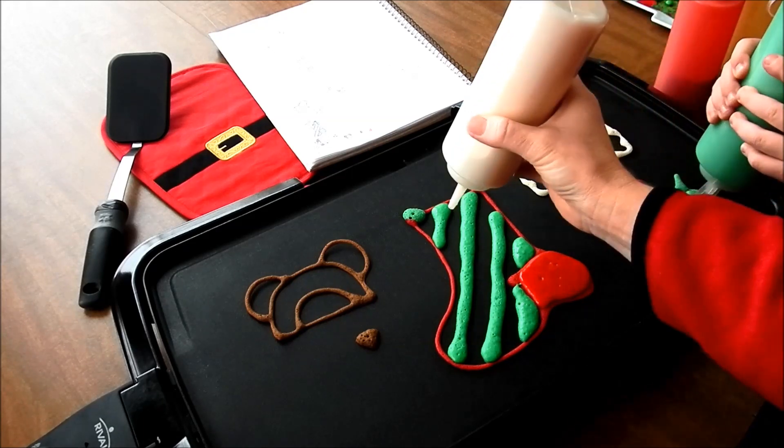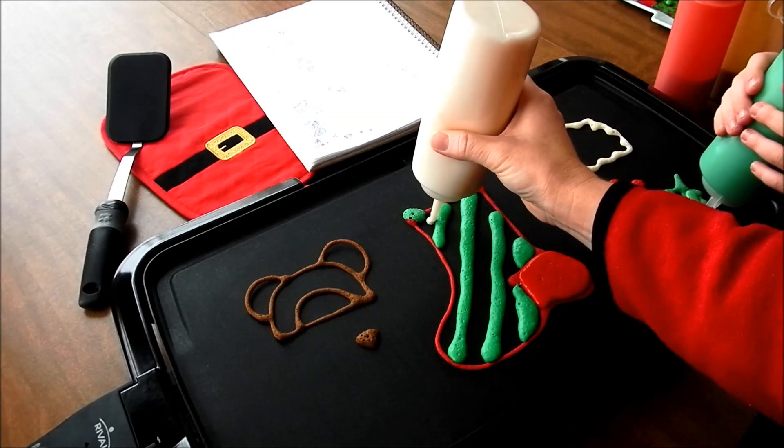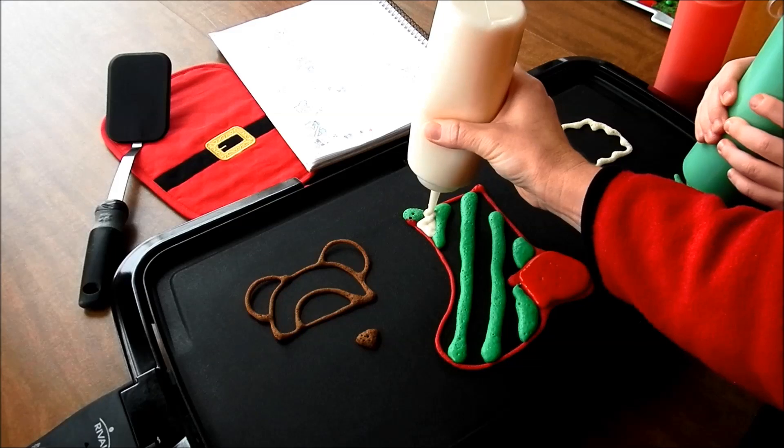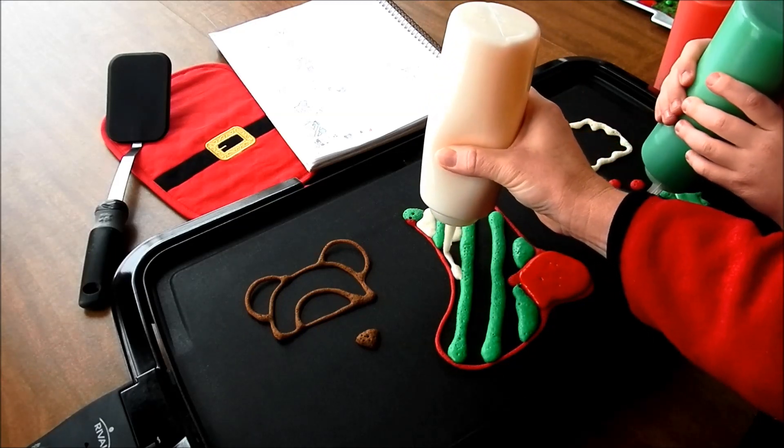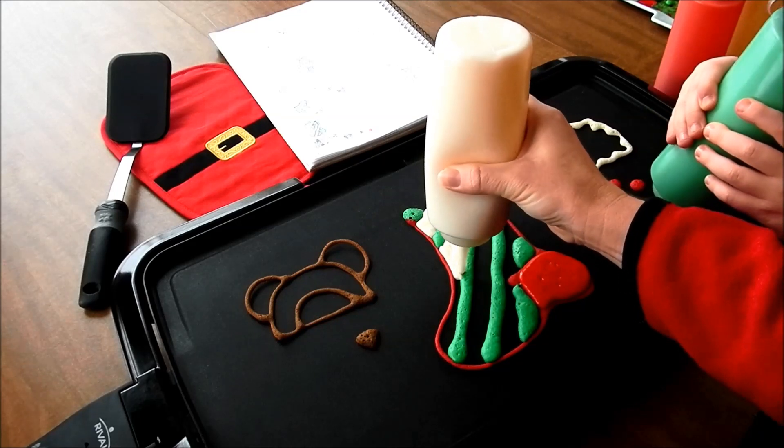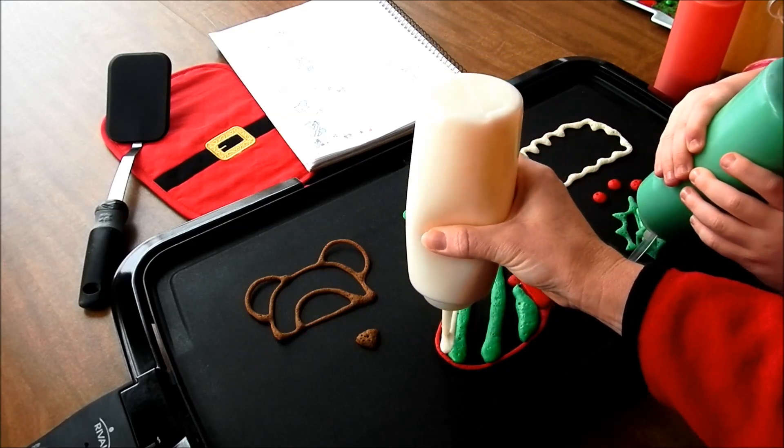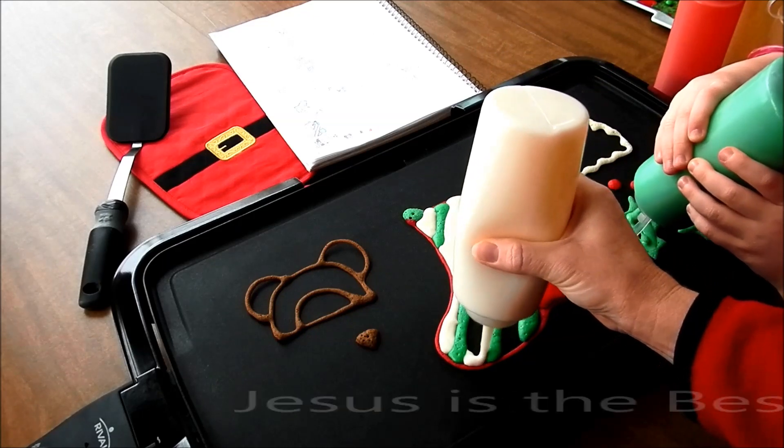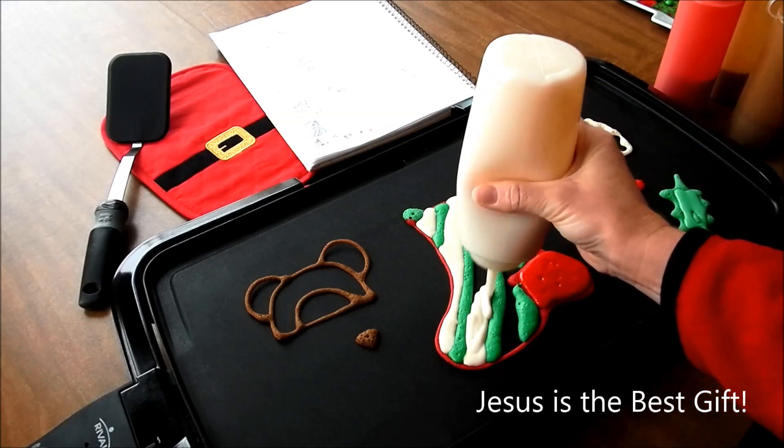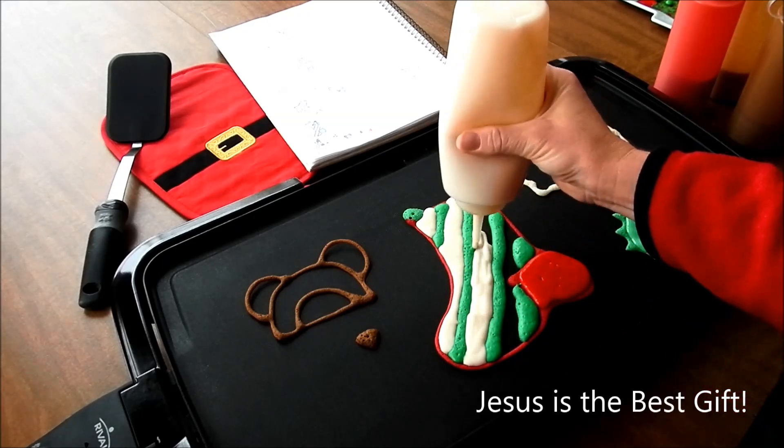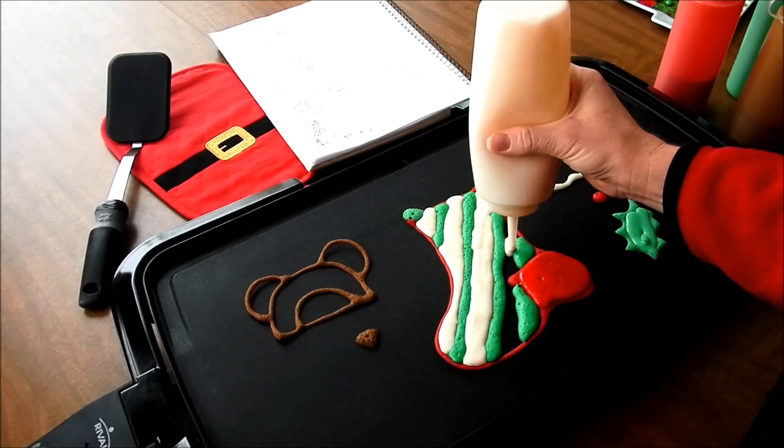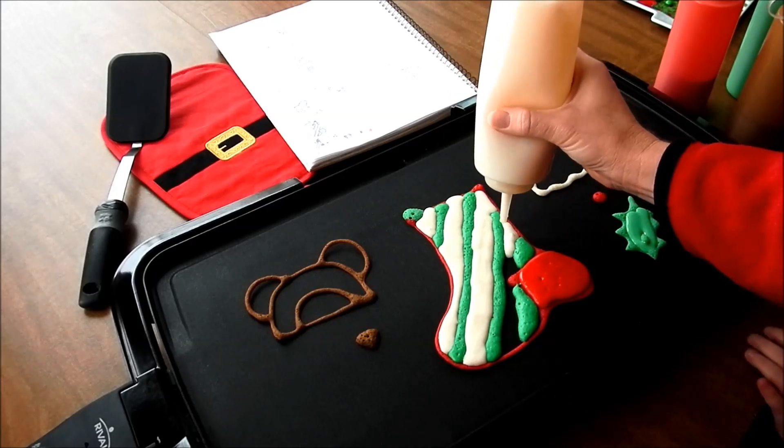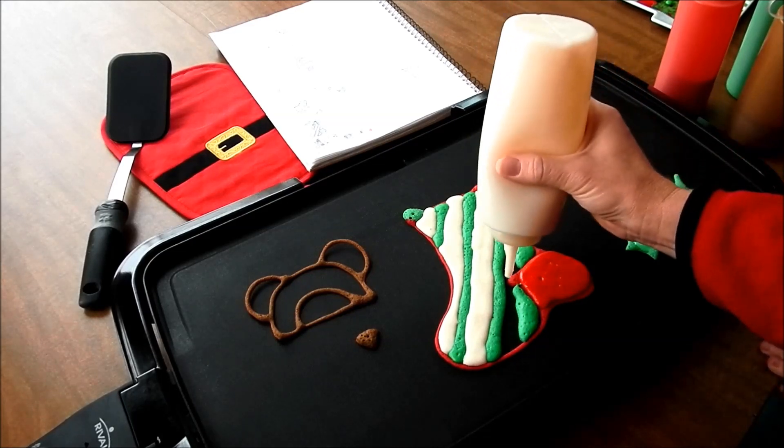So this is Christmas time. What did God give us at Christmas time? His son. That's right. He gave us his son. What's his son's name? Jesus. Jesus. That's like the best gift ever. That's why we're doing a stocking today. Because we're celebrating the best gift ever. God gave his son Jesus. And through him we can have salvation.